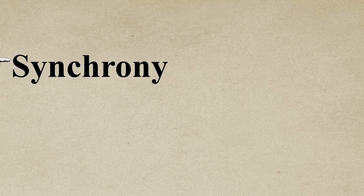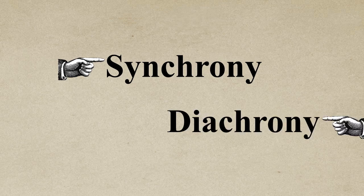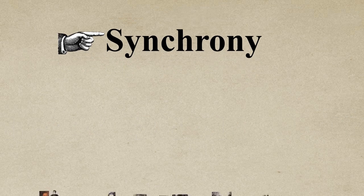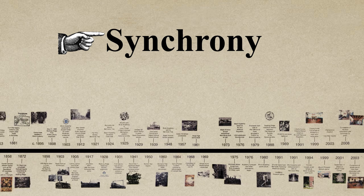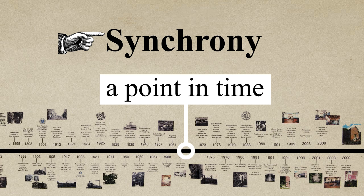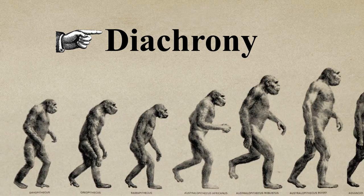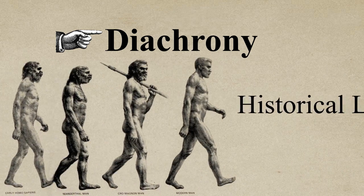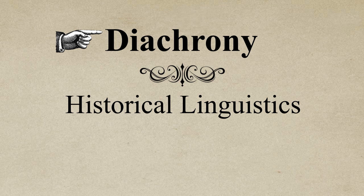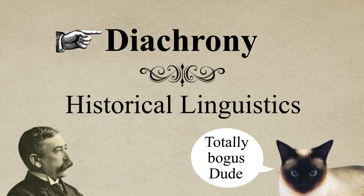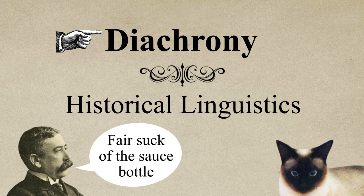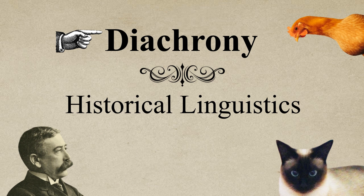Fourthly, Saussure distinguishes between synchrony and diachrony. Synchrony refers to a complete language system at just one point in time — think of it as a snapshot of language. Diachrony, on the other hand, is how that language develops over time; this is also known as historical linguistics. You may have noticed changes in language over your lifetime with different words appearing or disappearing, or slight pronunciation changes. That's diachrony.